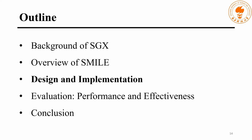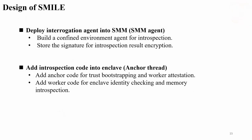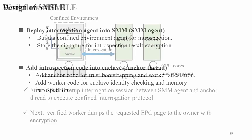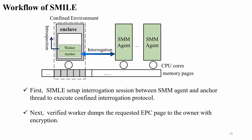We will introduce the details of how to design SMILE. There are two parts to build the main function. First, we deploy the interrogation agent into the SMM, called the SMM engine. The SMM engine builds the Confined Environment for the introspection and produces a signature for the introspection result verification. Next, we add introspection code into the enclave, named ANC-G. ANC-G has the ANC code for trustable bootstrapping and worker attestation, and also has the worker code for enclave identity checking and memory introspection.